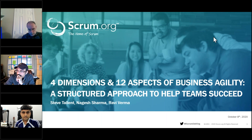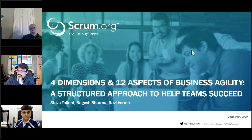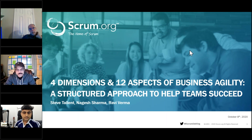Hello, everyone. Good morning, good afternoon, good evening. This is Patricia Kong from Scrum.org, and I will be moderating today's Scrum Pulse. We have three talented speakers who are going to go through the topic of four dimensions and 12 aspects of business agility: a structured approach to help teams succeed.